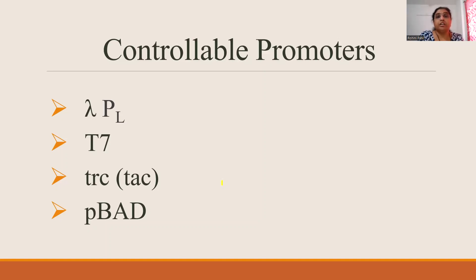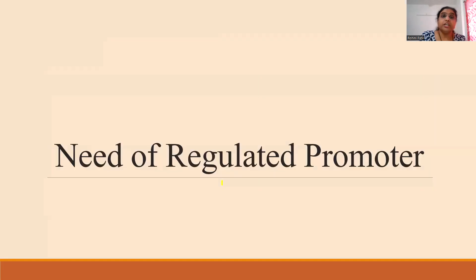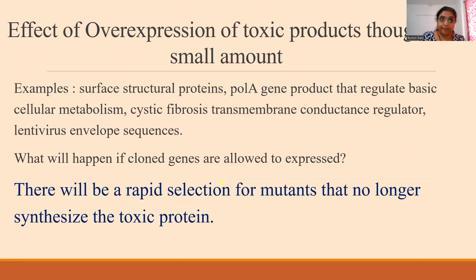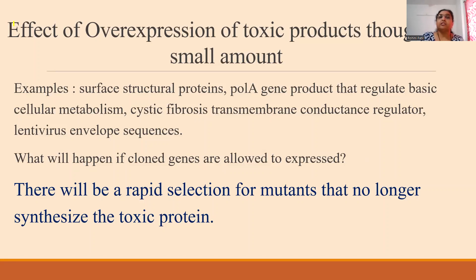These strong promoters allow high-level expression of genes, and because of that, there is a need for regulation — there have to be regulated promoters. Under strong promoters there is overexpression of genes. First, we will learn what happens when the cloned gene product is toxic. We are going to learn about the effect of overexpression of toxic products, even in small amounts.